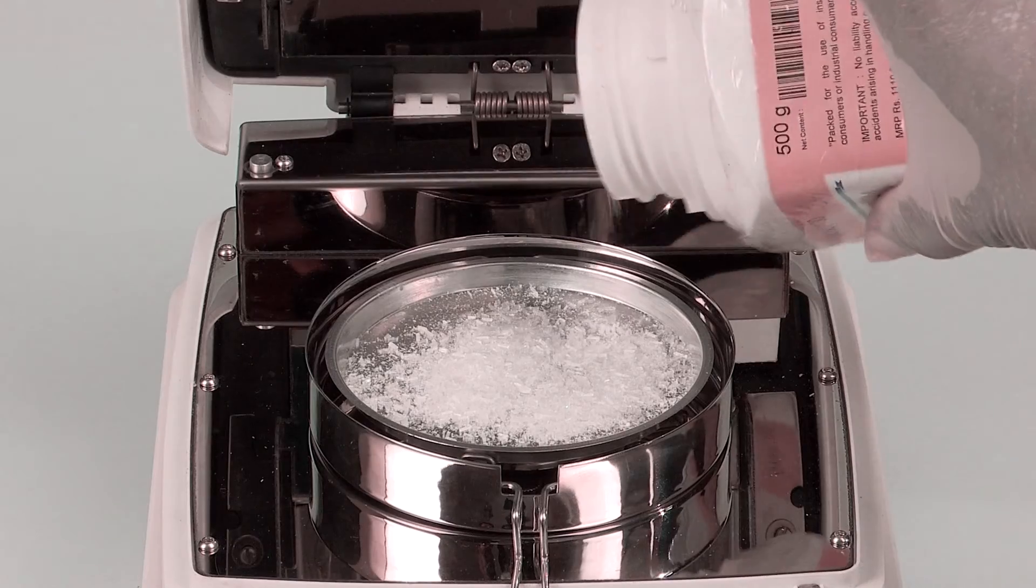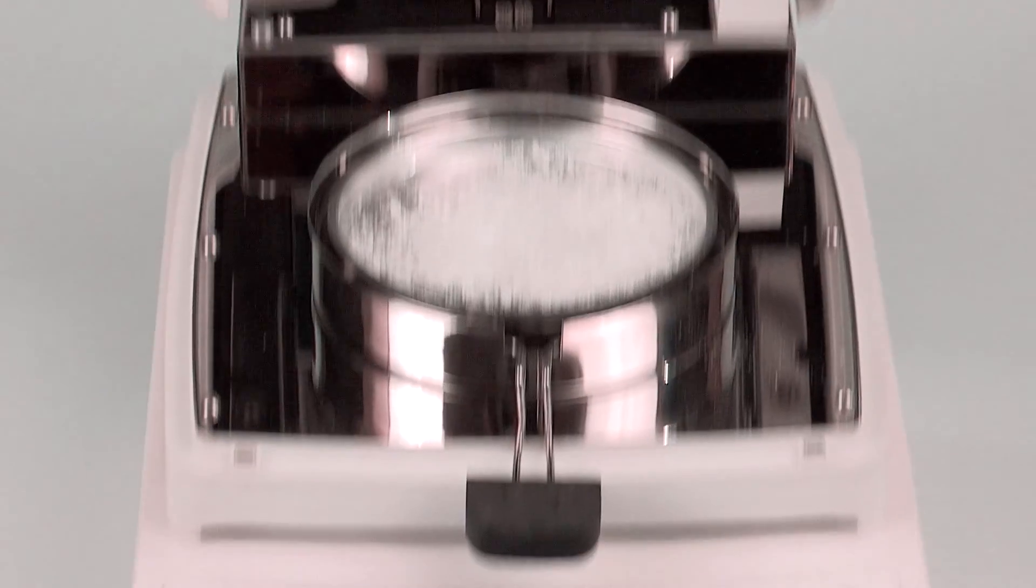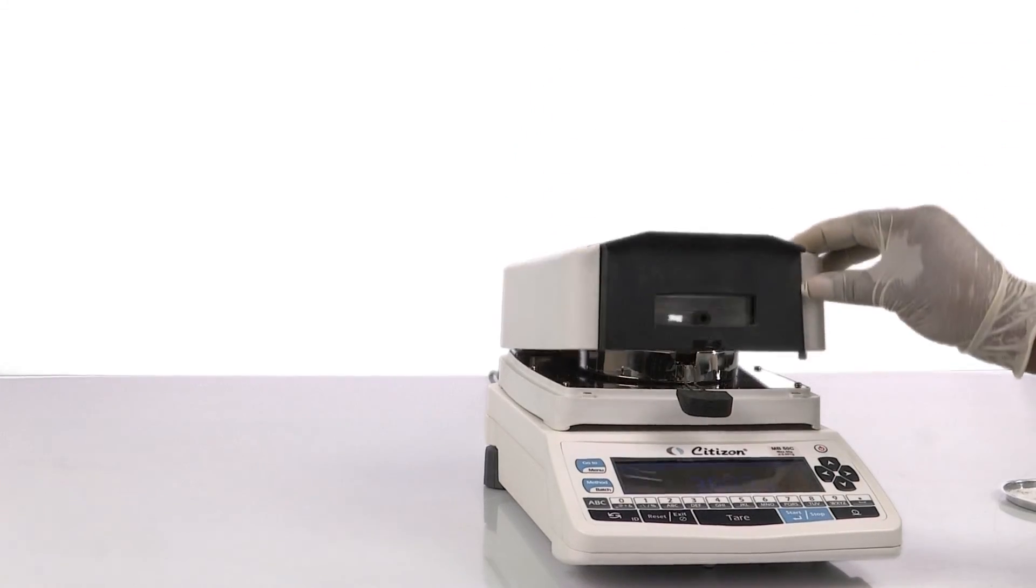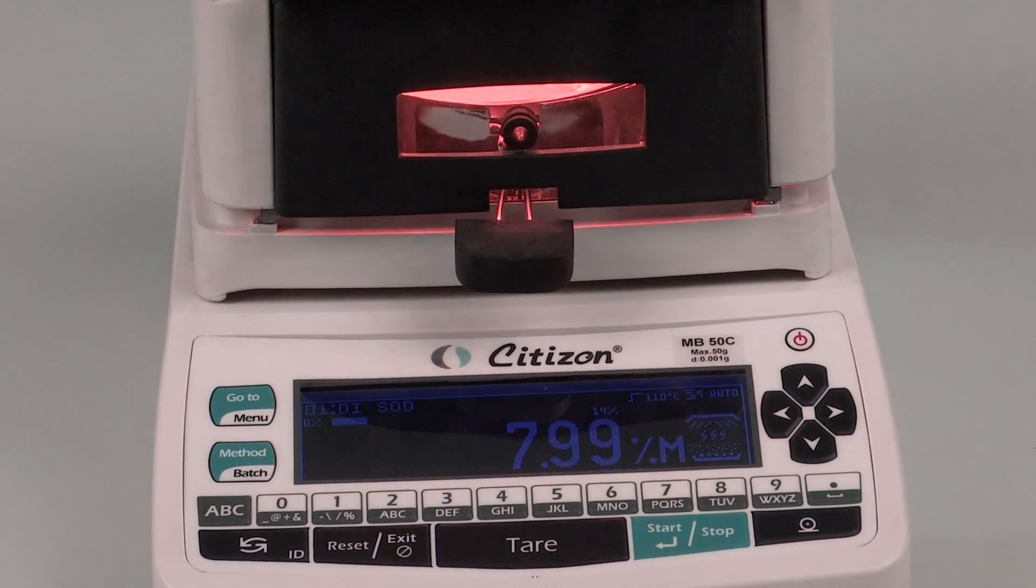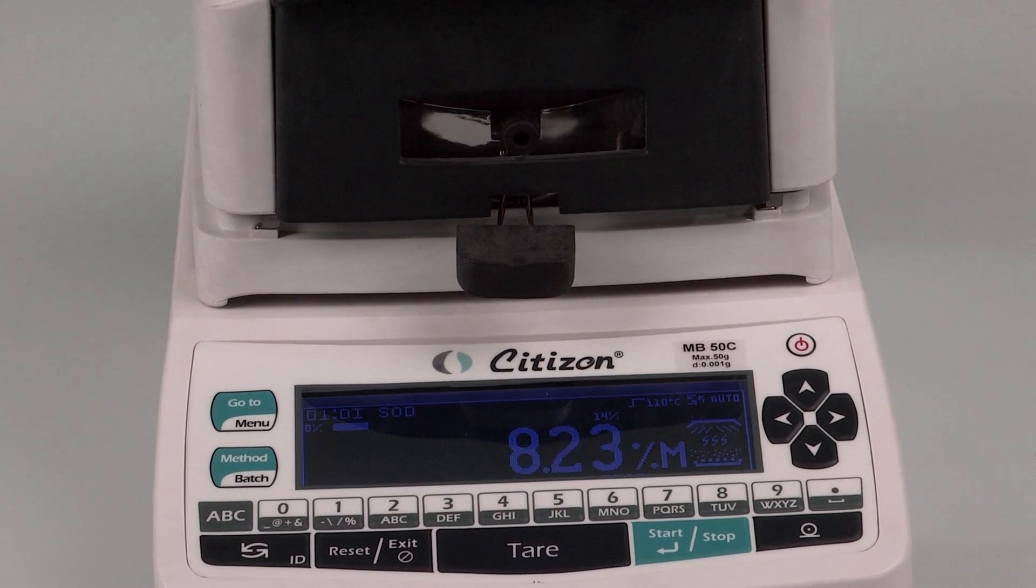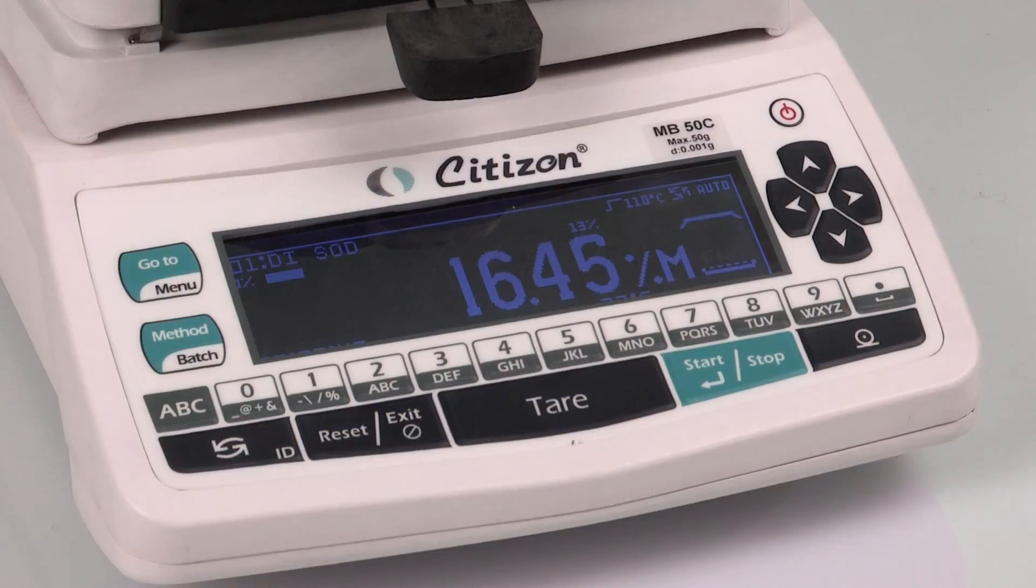The intelligent function is smart enough to analyze and suggest the appropriate parameters for the particular samples including the heating profile, switch-off criteria, and the ideal temperature for moisture determination for the particular sample, all by itself.